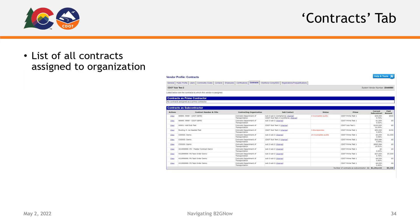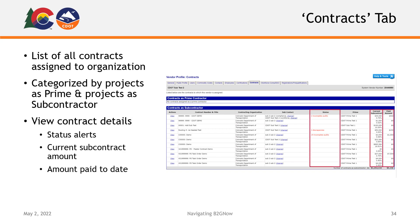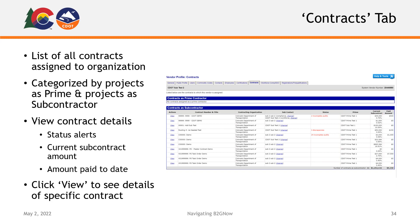Next is the Contracts tab, where you can find a list of all contracts your organization is currently assigned to. Your contracts will be categorized based on projects for which you are the prime contractor and those in which you are a subcontractor or supplier. On this list, you can also see details for each contract, such as any status alerts, the current subcontract amount, and the amount that has been paid to date. To see the details of any contract on this list, simply click the View link to the left of the desired contract and you will be taken to that contract's contract management page.